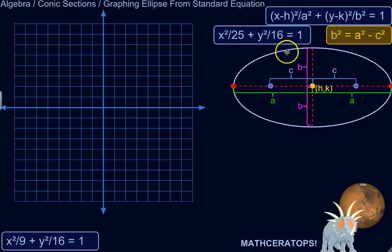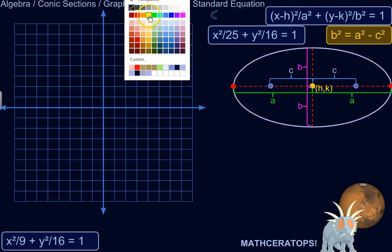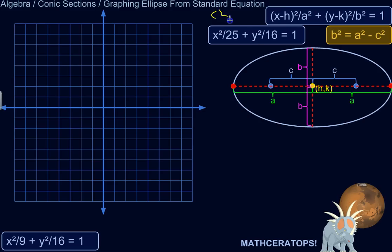And we know this ellipse is going to be centered on the origin, because h, k are the coordinates of the center of the ellipse. h, k, that's where the ellipse is centered. So this is like saying x minus 0, y minus 0. So the center of this ellipse is 0, 0. So that's nice.